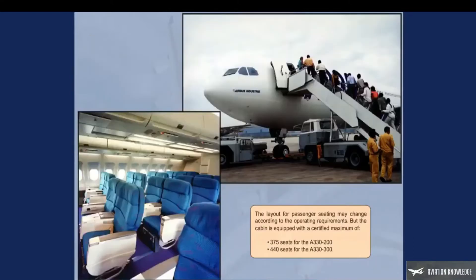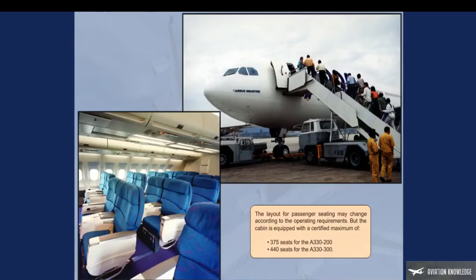The layout for passenger seating may change according to operating requirements, but the cabin is equipped with a certified maximum of 375 seats for the A330-200 and 440 seats for the A330-300. Between the two aircraft, the wingspan has not changed, whereas the A330-200 length has decreased and its height has increased.